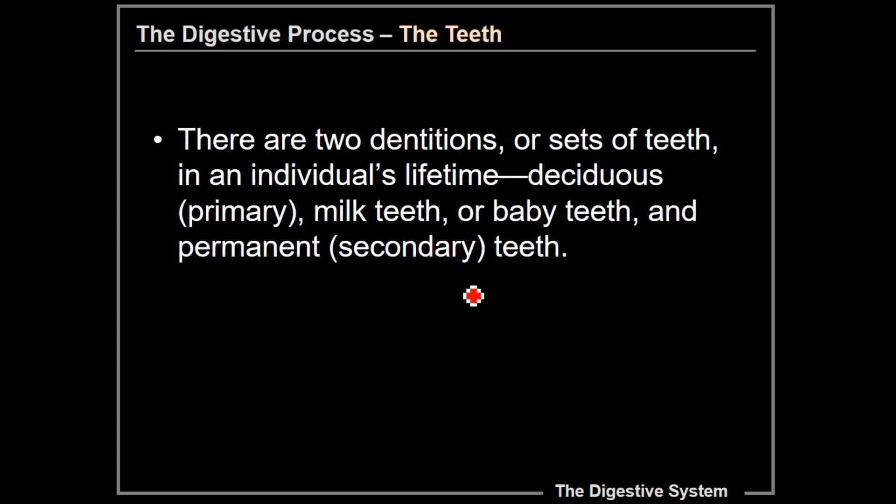There are two dentitions, or sets of teeth, that a human being will have in their lifetime. We commonly refer to the first set as baby teeth, but they're also known as deciduous teeth because we lose them — the same way a deciduous tree will lose its leaves in the fall. They're also referred to as primary teeth or milk teeth. Those teeth are then replaced by your permanent, or adult, teeth, also known as your secondary teeth, and those are supposed to last you for the rest of your adult life.